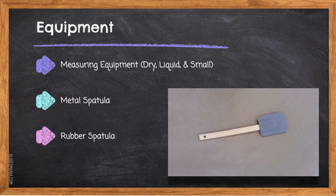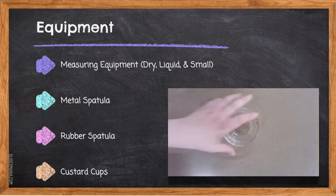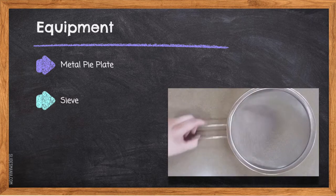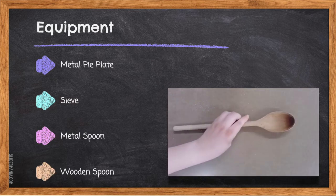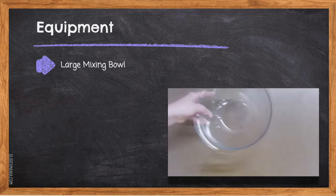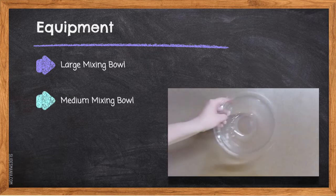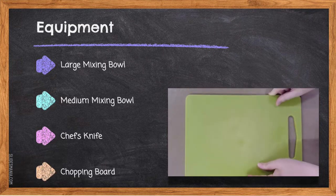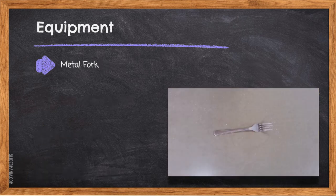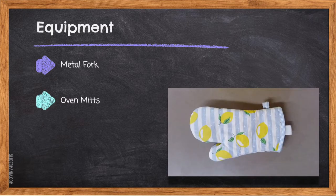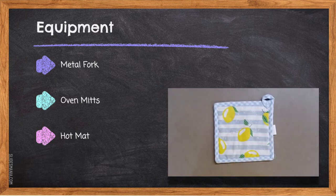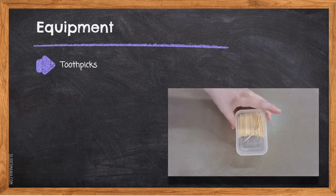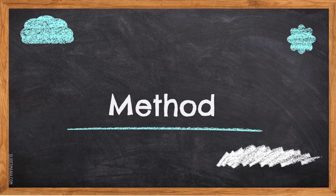Additional equipment includes: a metal spatula, rubber spatula, custard cups, metal pie plate, a sieve, a metal spoon, wooden spoon, large mixing bowl, medium mixing bowl, chef's knife, chopping board, a metal fork, oven mitts, hot mat, a cooling rack, and toothpicks.